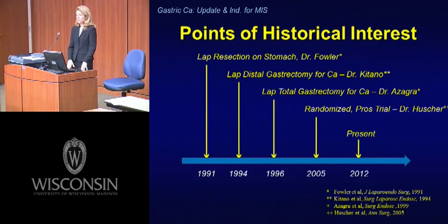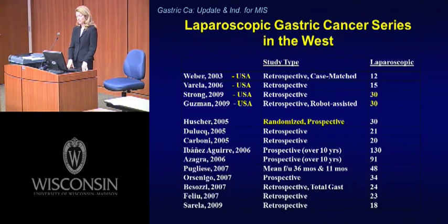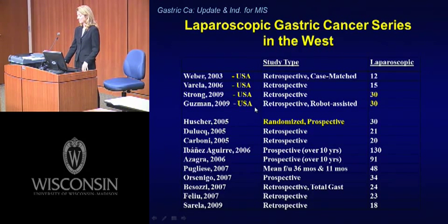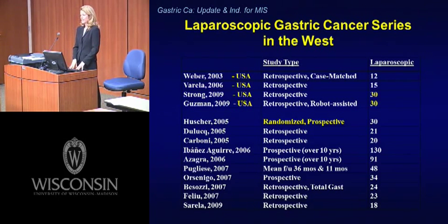From that time onward, many publications on laparoscopic approaches for gastric cancer have appeared, but the majority are from the East — very few from the Western world. While several pages could fill with Eastern studies, the Western literature is summarized with only four reports from the United States plus the randomized prospective study from Italy. This raises the question: why haven't minimally invasive approaches for gastric cancer taken off here the way they have in the East?